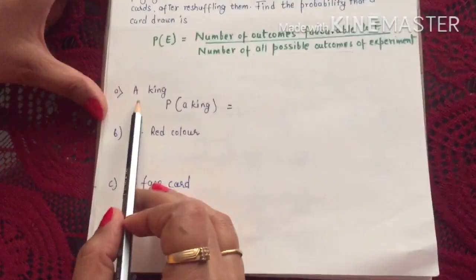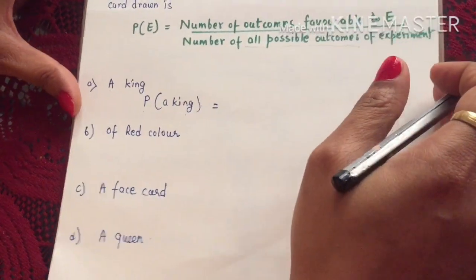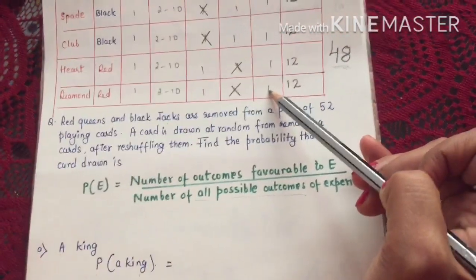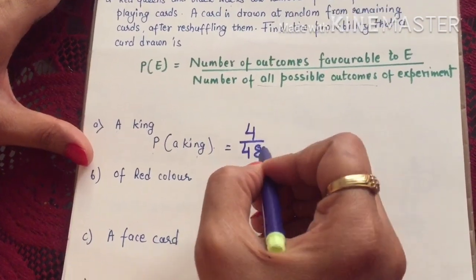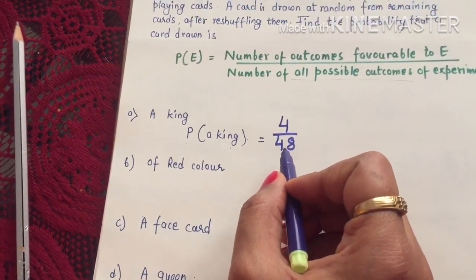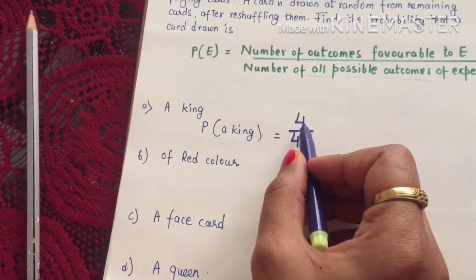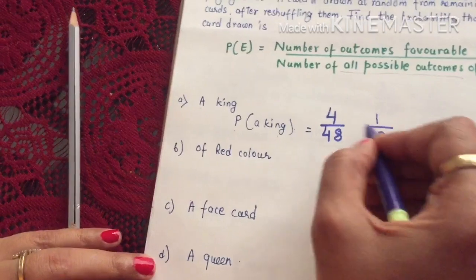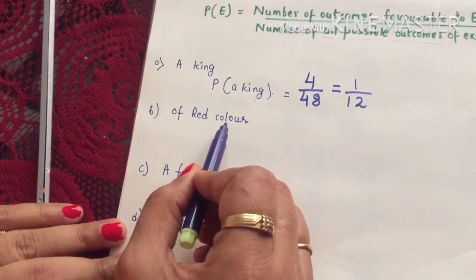Let's find the probability of drawing a King. No color is specified, so all four kings remain — none were removed. Favorable outcomes are 4, and possible outcomes are 48 (not 52). So probability = 4/48, which reduces to 1/12.